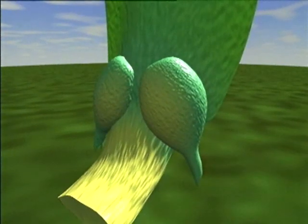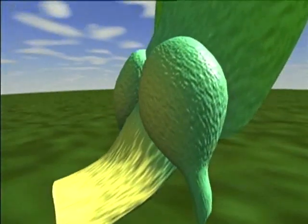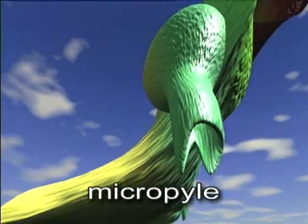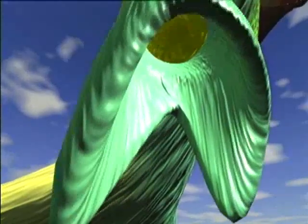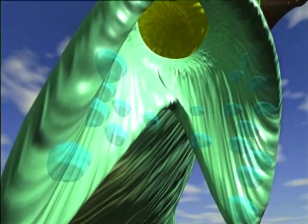Each ovule has an outer protective layer or integument. An opening in the integument, the micropyle, consists of a canal that terminates in two micropylar arms, each covered with a sticky secretion.